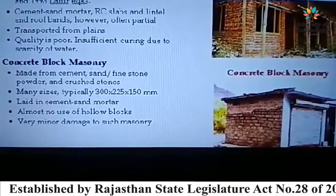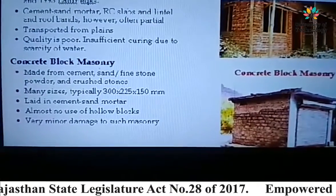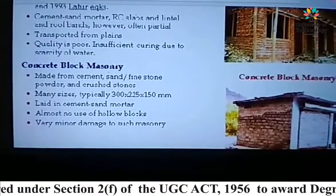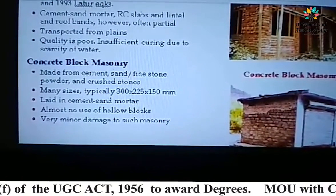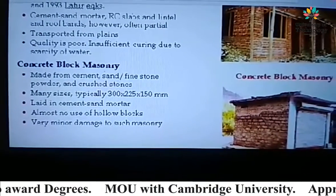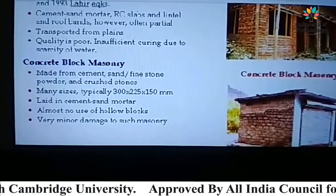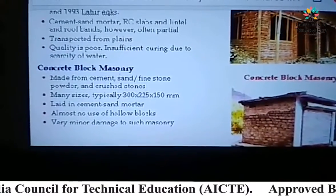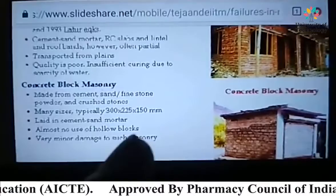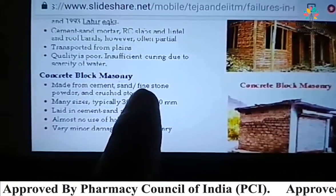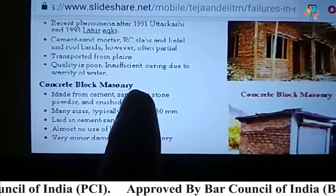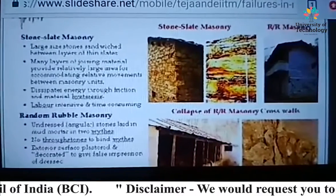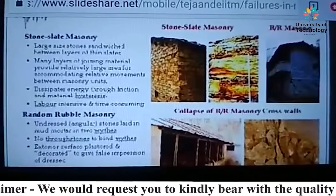Another type is concrete block masonry. Concrete block masonry is made from cement, sand, fine stone powder, and crushed stones. Many sizes are typically used, laid in cement sand mortar. There is almost no use of hollow blocks and very minor damage to such masonry.